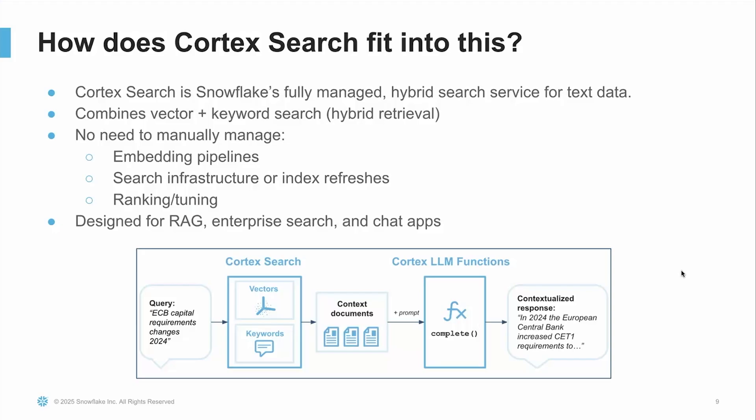So now let's talk about Snowflake Cortex Search. Cortex Search is Snowflake's fully managed hybrid search service for text data. What makes it powerful is that it combines the best of both worlds: vector search for understanding meaning and keyword search for precision, so you get more accurate and relevant results through hybrid retrieval. The best part is that you don't have to worry about managing any of the underlying complexity — no need to build or maintain your own embedding pipelines, no infrastructure to manage, no indexes to refresh manually, and no tedious ranking or tuning required. Cortex Search is purpose-built for modern use cases like retrieval augmented generation, enterprise search, and AI-powered chat applications. It's designed to let you focus on building great experiences without being stuck in the weeds of search engineering.